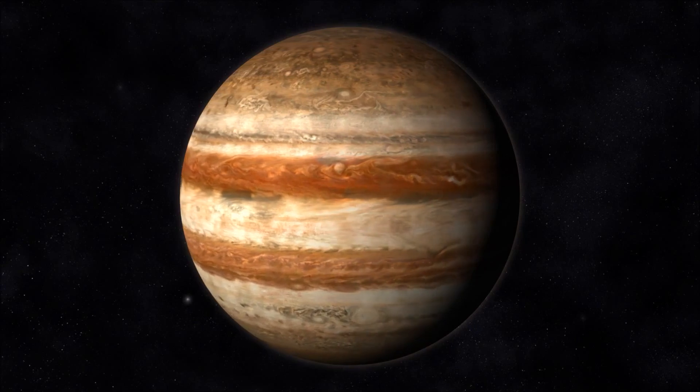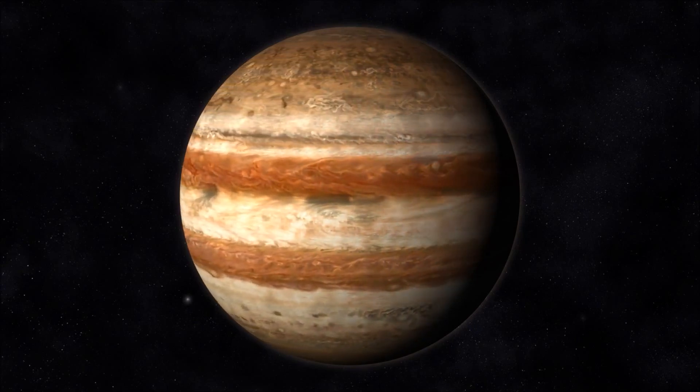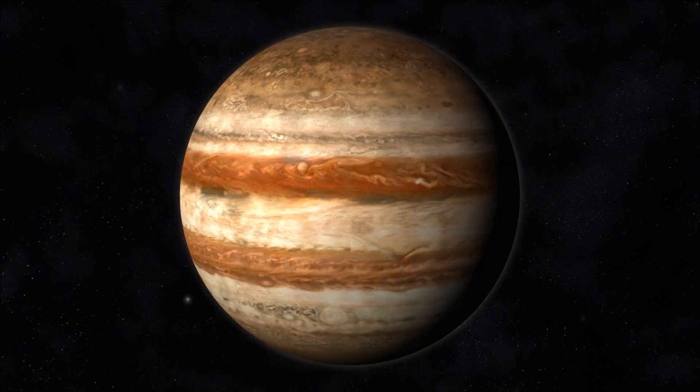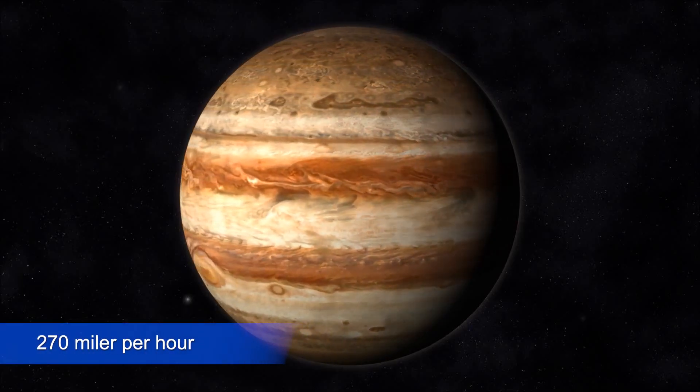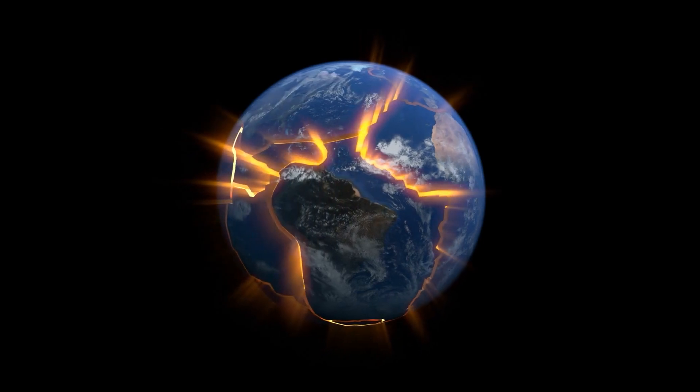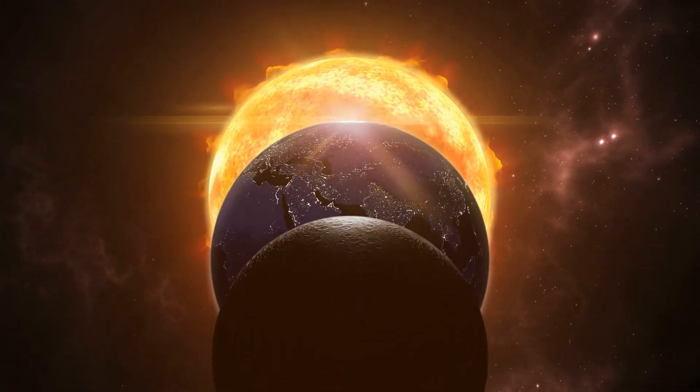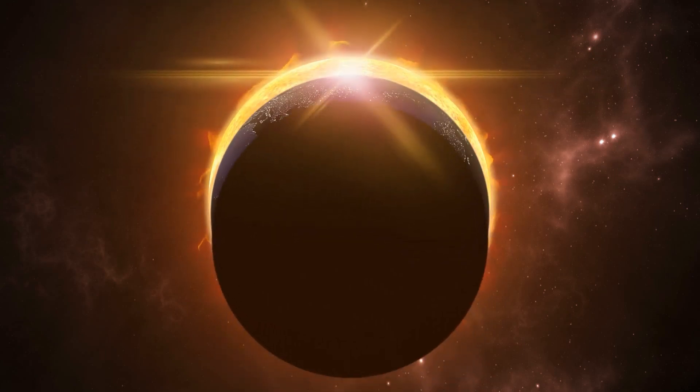Jupiter's Great Red Spot is a massive storm that has lasted for ages and is one of its most spectacular features. With winds in excess of 270 miles per hour, this enormous storm, more than twice the size of Earth, is one of the solar system's most potent natural occurrences.